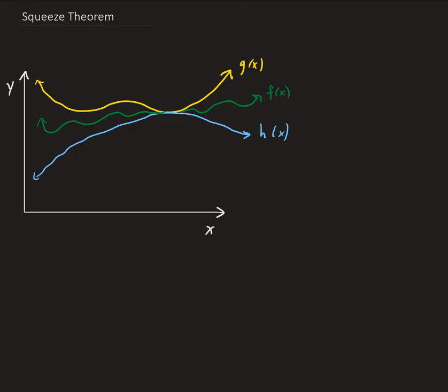Given this situation, given these functions where we have g of x is an upper bound for f, and h of x is a lower bound for f. So we have that h of x is less than or equal to f of x, and f of x is less than or equal to g of x.